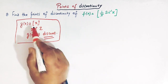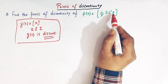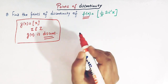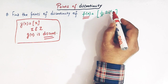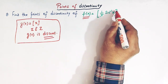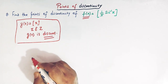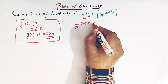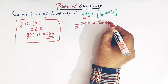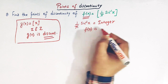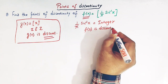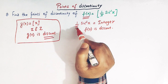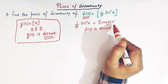For our function, the expression inside the greatest integer symbol is (1/π)·sin⁻¹x. So f(x) is discontinuous for all values of x for which (1/π)·sin⁻¹x is an integer. We need to find all values of x for which this entire term (1/π)·sin⁻¹x is an integer.